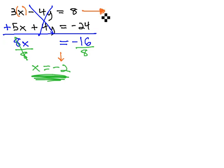Let's do that in the first equation for no other reason than the numbers are a bit smaller. 3x, we just found out x was negative 2, minus 4y equals 8. 3 times negative 2 is negative 6, minus 4y equals 8.